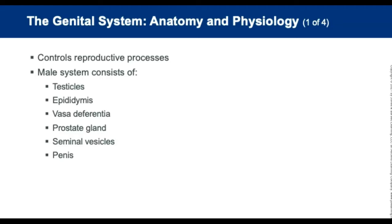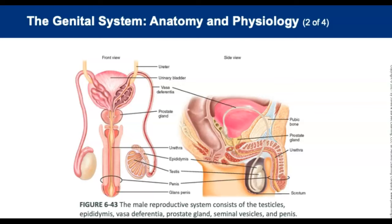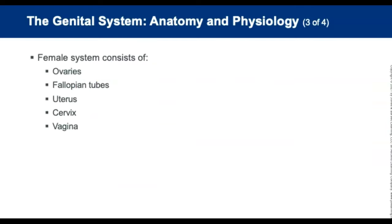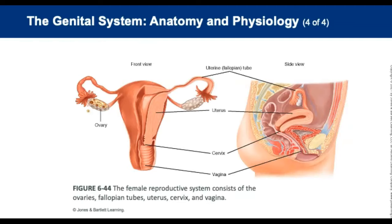The genital system controls the reproductive processes. The male reproductive system consists of the testes, epididymis, vas deferens, prostate gland, seminal vesicles, and penis — most lying outside the pelvic cavity except the prostate and seminal vesicles. The female reproductive system consists of the ovaries, fallopian tubes, uterus, cervix, and vagina, contained entirely within the pelvic cavity except the clitoris and labia.